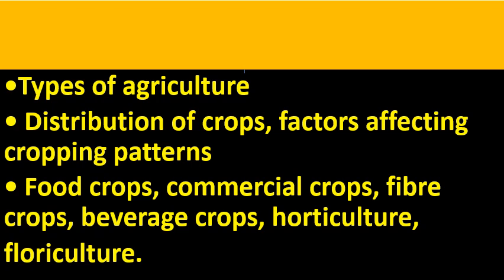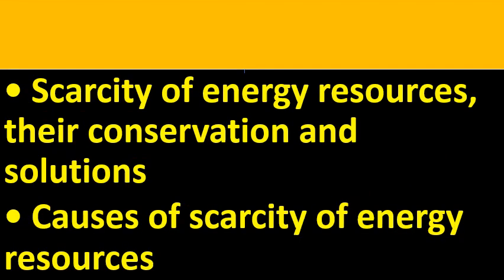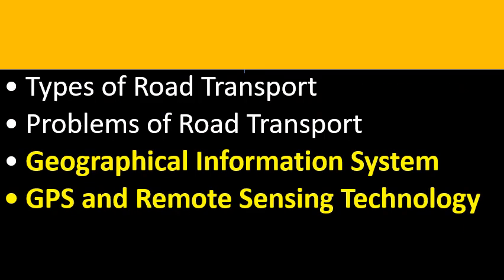Types of agriculture practiced in India, factors influencing them, food crops, commercial crops, and geographical requirements to cultivate them. Scarcity of energy resources and causes for their scarcity. Conventional and non-conventional energy resources to be learned. Types of road transport, problems of road transport, GIS, GPS, and RST — their uses to be learned.